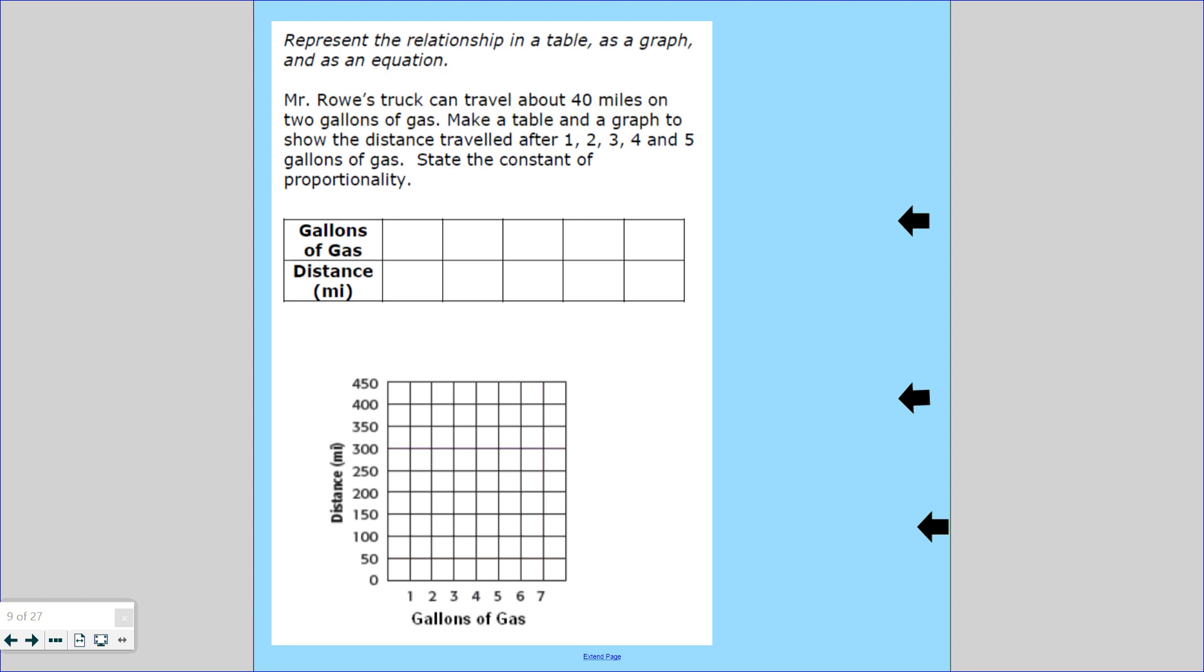Make a table and graph to show the distance traveled after 1, 2, 3, 4, and 5 gallons of gas. State the constant of proportionality. So that means 1 gallon, 2 gallons, 3 gallons, 4 gallons, 5 gallons. In 2 gallons he can travel 40 miles. That means in 1 gallon of gas he can only go 20. I think I see a pattern here. 60, 80, 100.